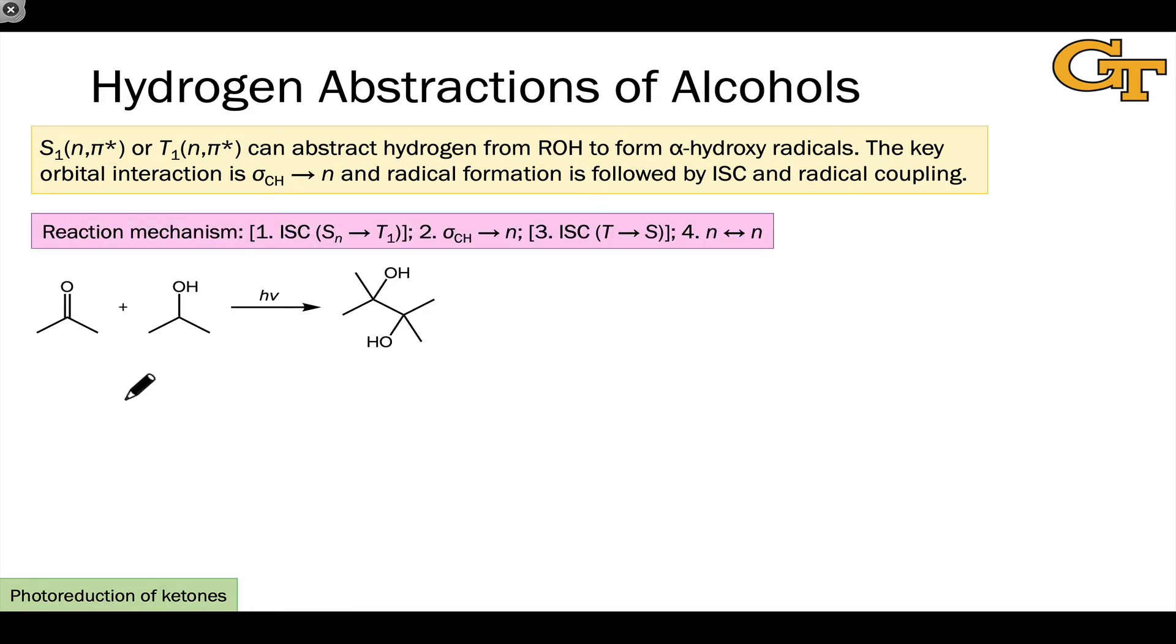The general mechanism of hydrogen abstraction starts of course with photoexcitation of the ketone to its excited singlet state. Rapid intersystem crossing takes place in certain classes of ketones. This can sometimes be more rapid than photochemical reaction depending on the structure of the ketone.